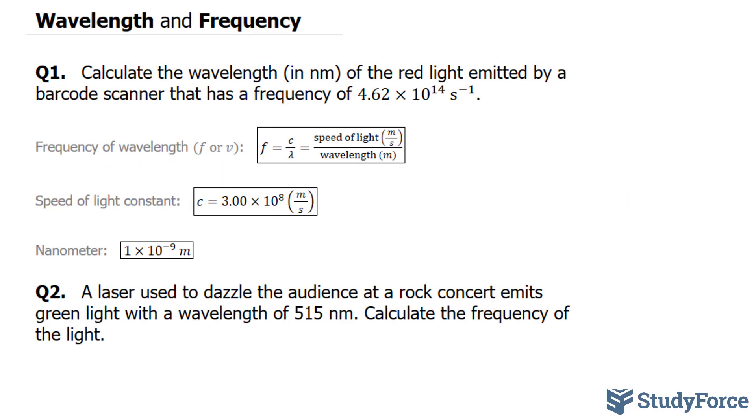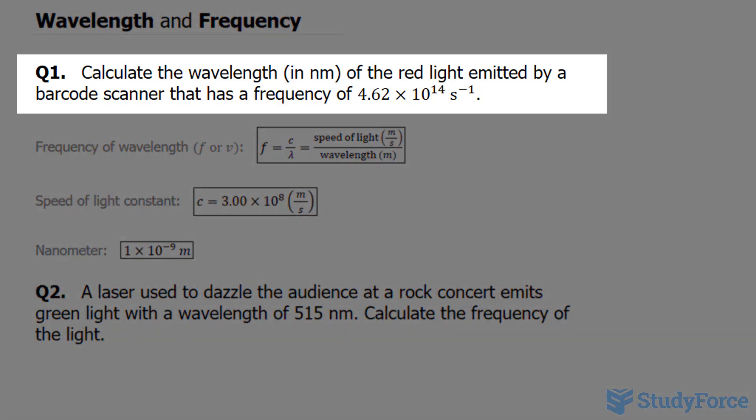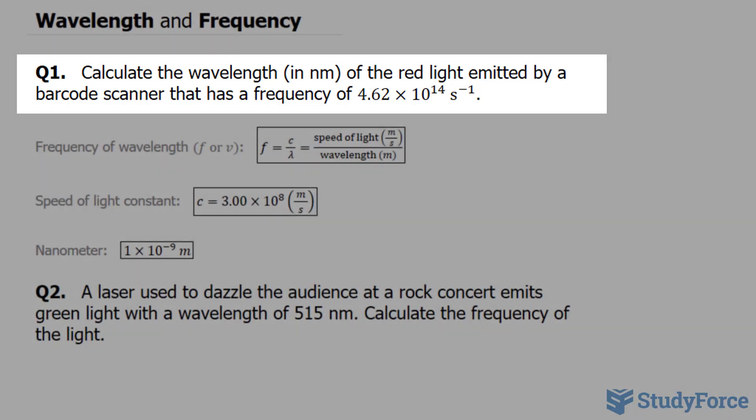In this lesson, I'll show you two examples on how to solve problems involving wavelength and frequency. Question 1 reads: calculate the wavelength in nanometers of the red light emitted by a barcode scanner that has a frequency of 4.62 times 10 to the power of 14 per second.